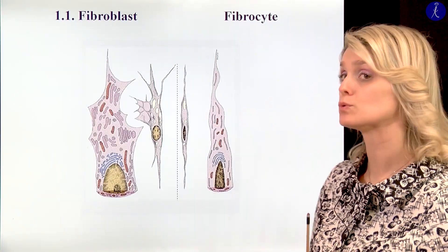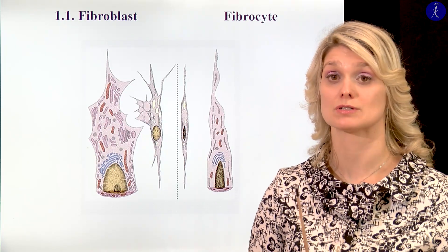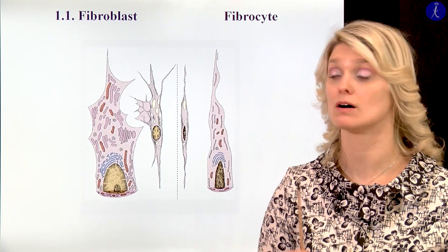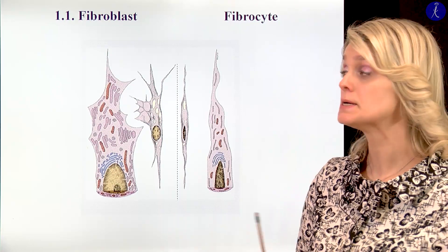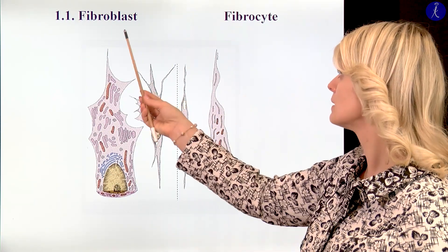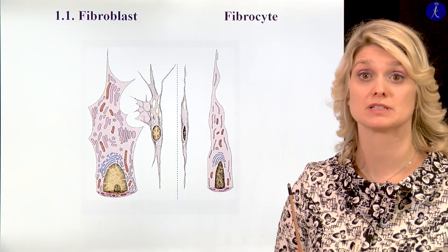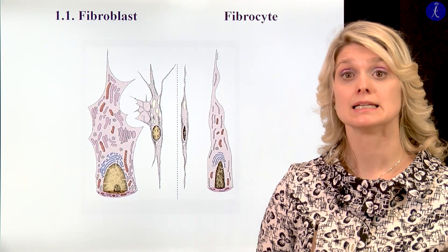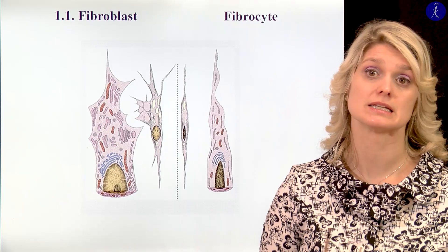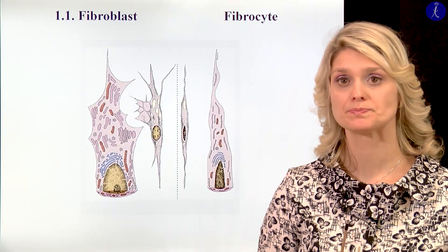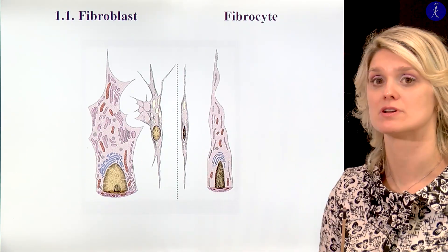Now I would like to show you the details of the structure of the fibroblasts and fibrocytes. These are different cells. The fibroblasts are the active cells; the fibrocytes are the inactive forms, and of course that's why we have differences between them.